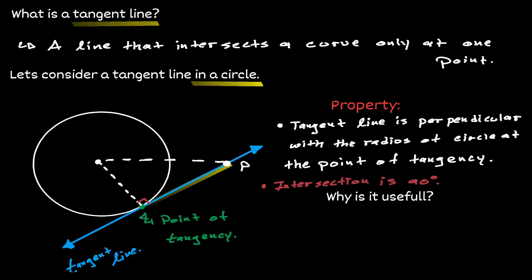Notice that we have created a right triangle. Remembering that the tangent line is perpendicular to the radius, when we connect the center, we create a triangle, and notice that the interior angle is 90 degrees. This is a very useful property.